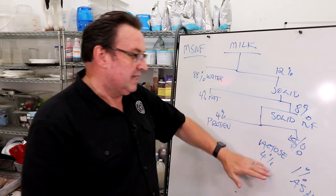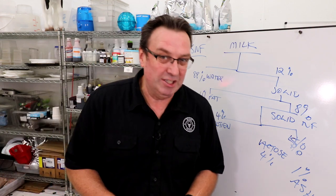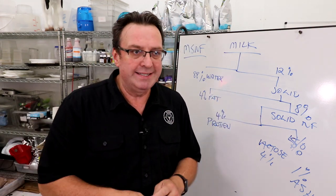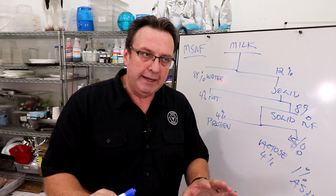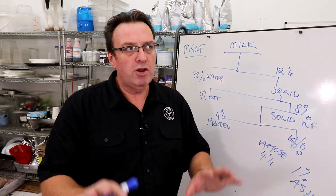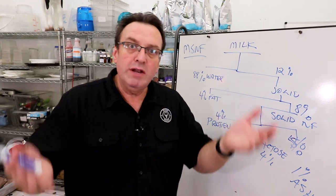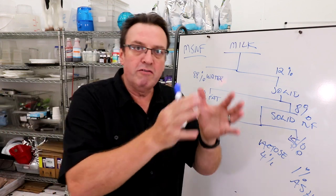And then one percent ash. That's how milk is broken down. So let's talk a little bit about how an ice cream recipe works, because you really do need to balance out the process of milk fat and milk solids non-fat.